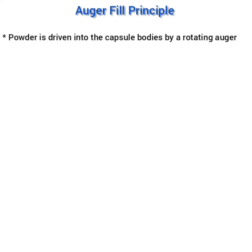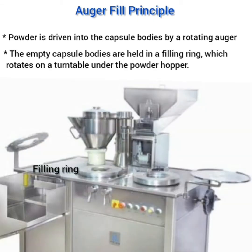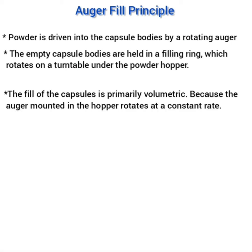The powder is driven into capsule bodies by the rotating auger. Empty capsule bodies are placed or held in the filling ring, which rotates on a turntable under the powder hopper. The fill of the capsules is primarily volumetric because the auger mounted in the hopper rotates at a constant rate.